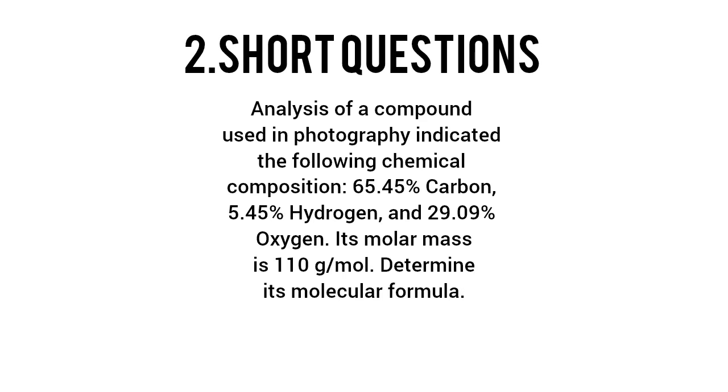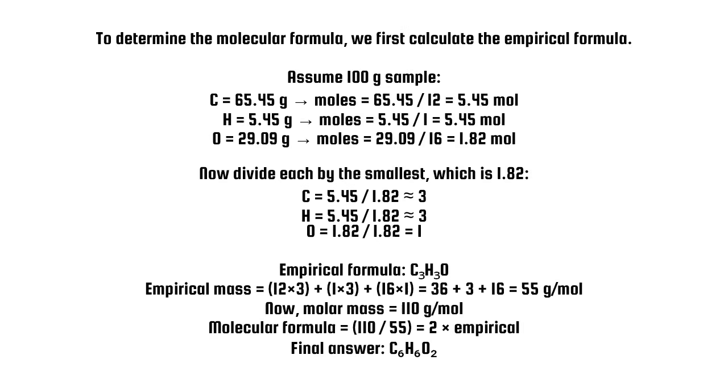Short question 1. Analysis of a compound used in photography indicated the following chemical composition: 65.45% carbon, 5.45% hydrogen, and 29.09% oxygen. Its molar mass is 110 grams per mole. Determine its molecular formula. To determine the molecular formula, we first calculate the empirical formula. Assume 100G sample. C equals 65.45G, moles equals 65.45 divided by 12 equals 5.45 mole.